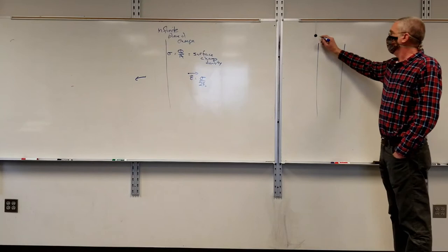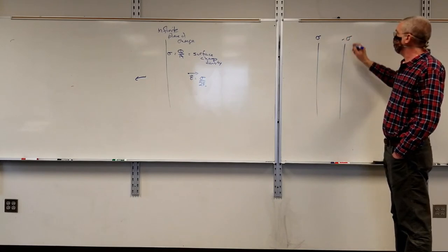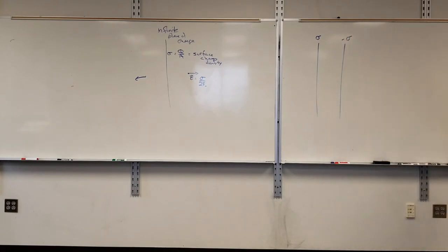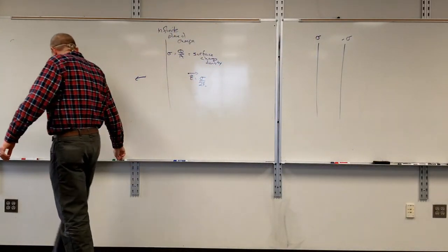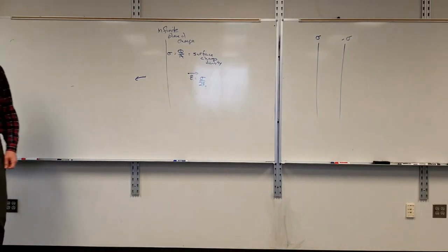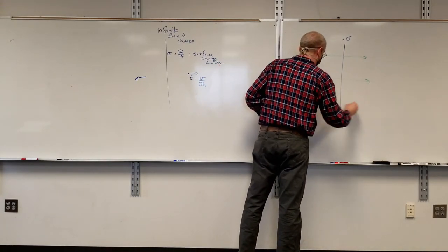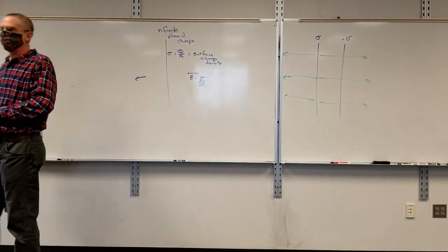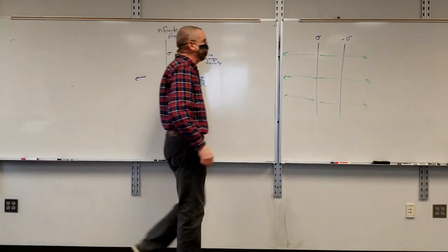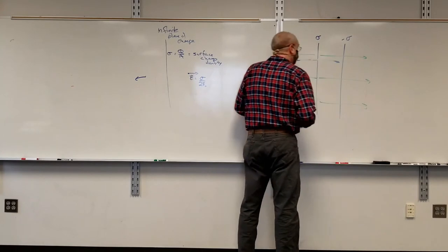Now I take two plates. This one has uniform surface charge density of sigma, and this one of negative sigma. We are going to make the assumption that they are equal in magnitude, just opposite in sign — they are additive inverses of one another. If sigma is a positive number, then my electric field goes away from it. The green arrows represent the electric field coming from the left plate.